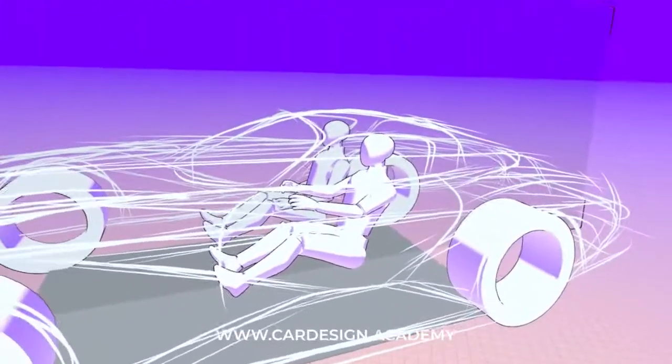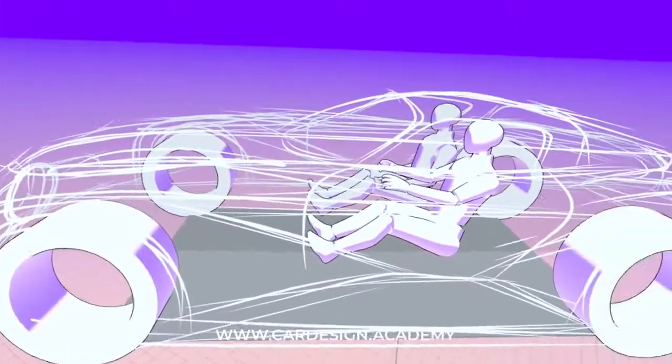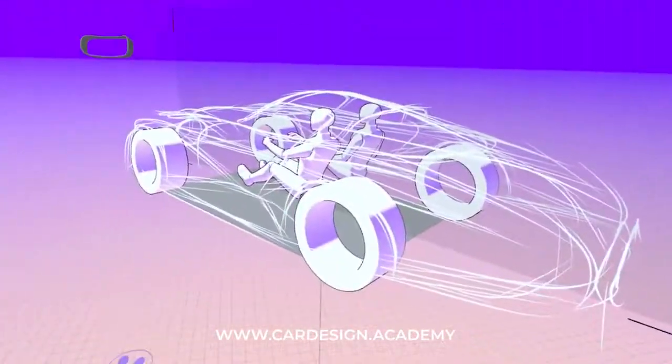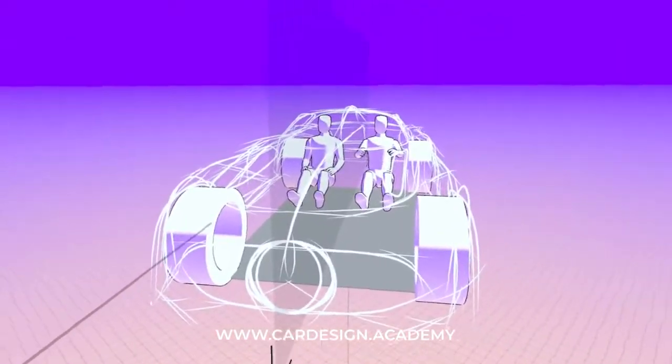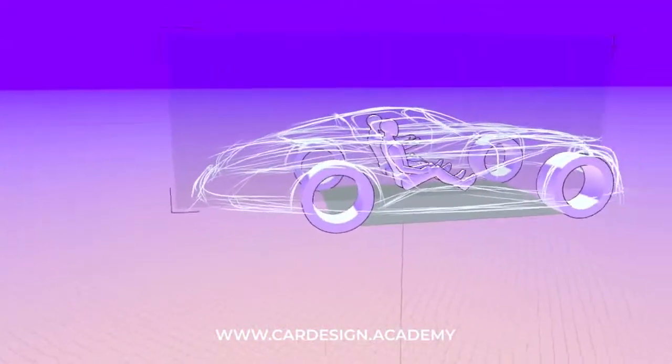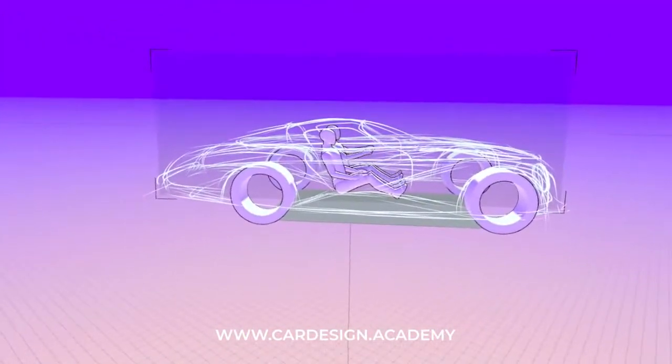And it's all dimensionally accurate. So that's the power of rigged chassis. You can instantly develop an accurate vehicle package, get everything in the right proportions and just start sketching. Thanks for watching, I'll see you next time.